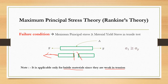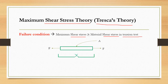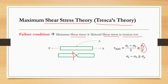For ductile materials, the shear stress theory is used since they are weak in shear. Tresca says that whenever the shear stress in the component becomes greater than or equal to the material shear stress from a simple tension test, the material will fail. For ductile materials the failure plane is at 45 degrees. The equation is: tau_max ≥ shear stress from the tension test. Tau_max is calculated as the average of the maximum and minimum principal stresses: (Sigma_1 − Sigma_3) / 2.